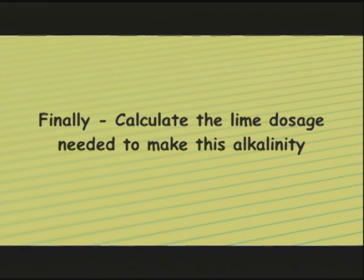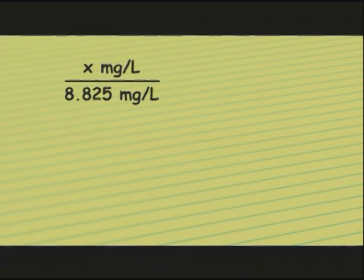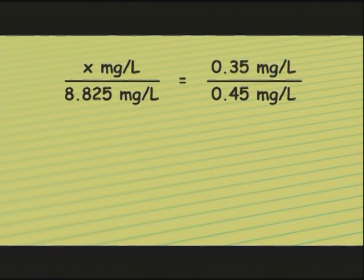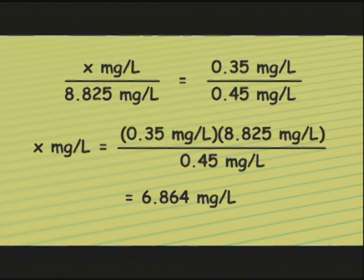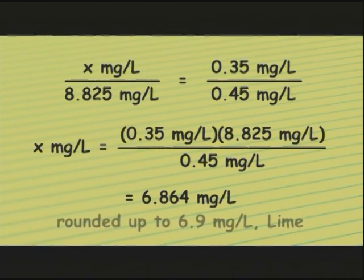Finally, calculate the lime dosage needed to produce this alkalinity. x mg/L of lime divided by 8.825 mg/L of alkalinity equals 0.35 mg/L of lime over 0.45 mg/L of alkalinity. So x mg/L of lime equals 0.35 times 8.825 divided by 0.45, which gives 6.864 mg/L of lime, rounded up to 6.9 mg/L of lime.